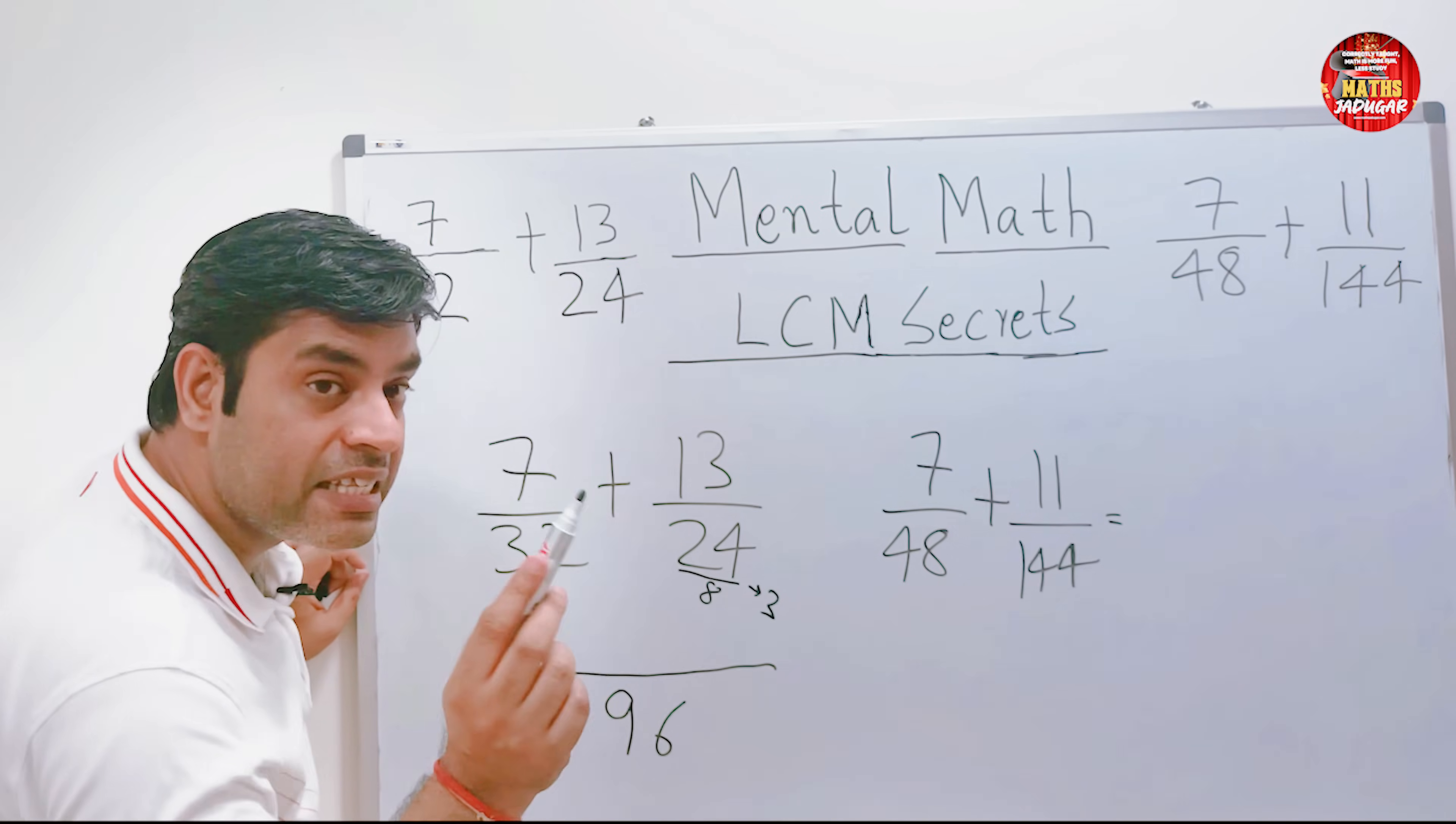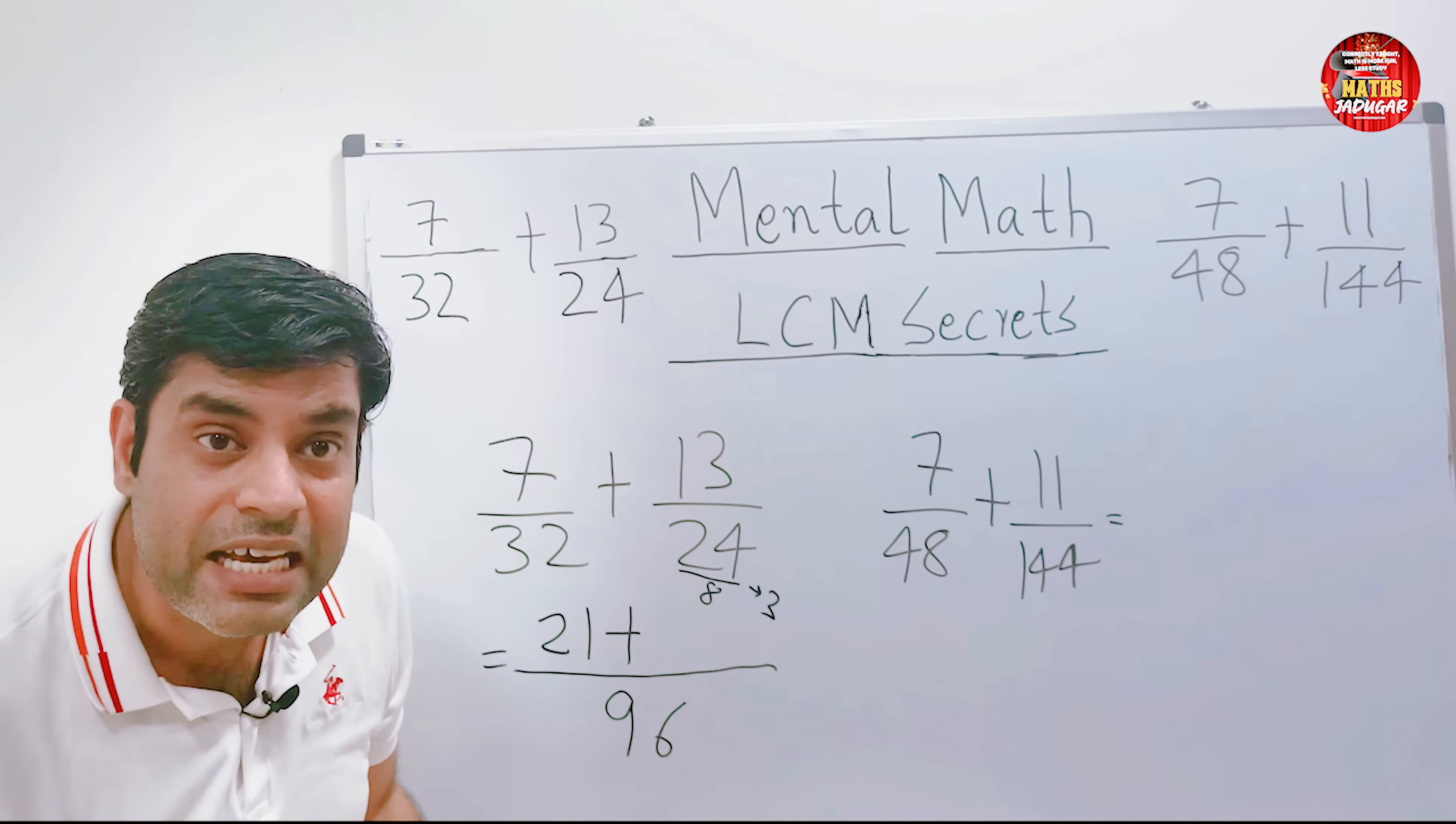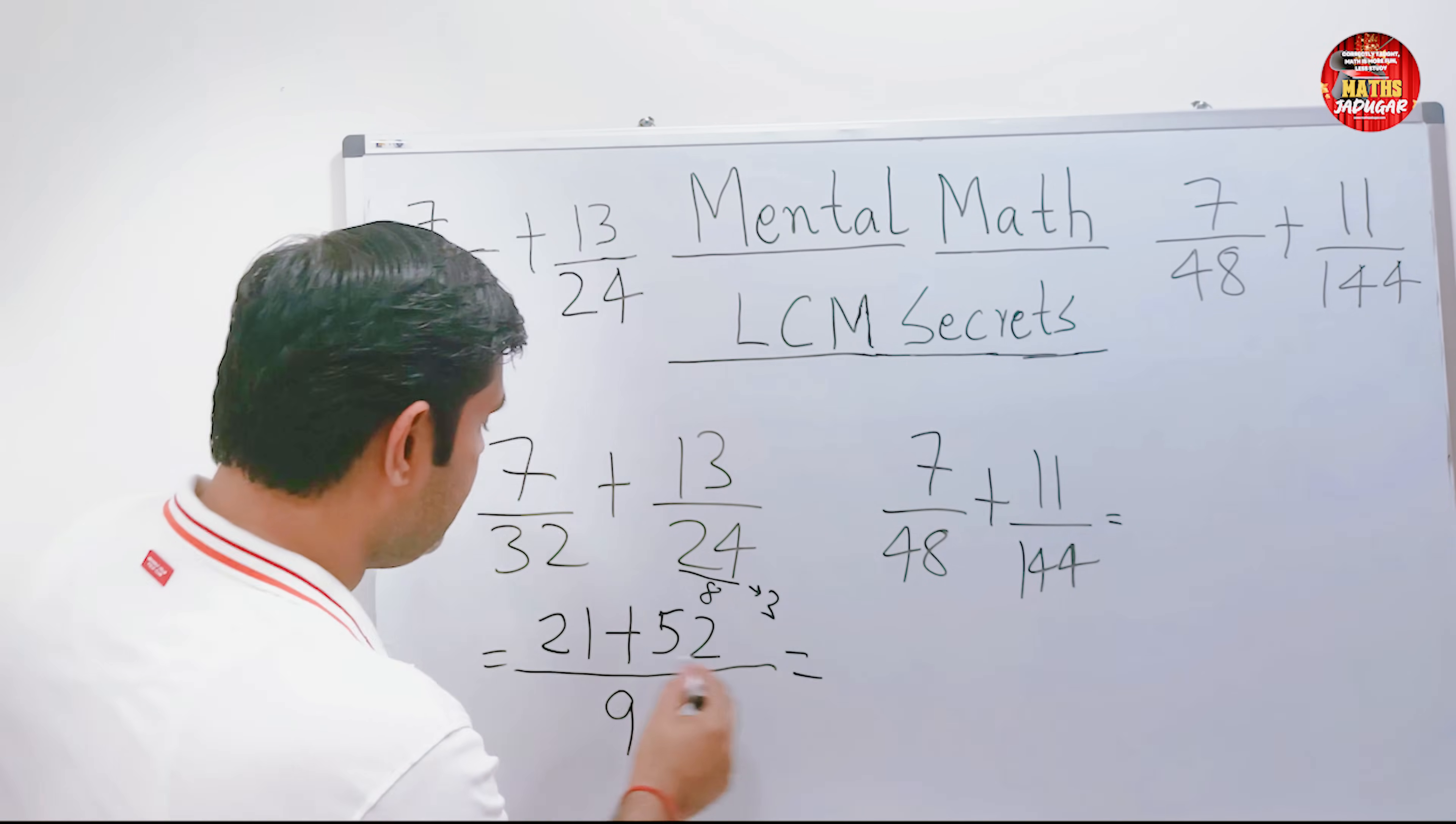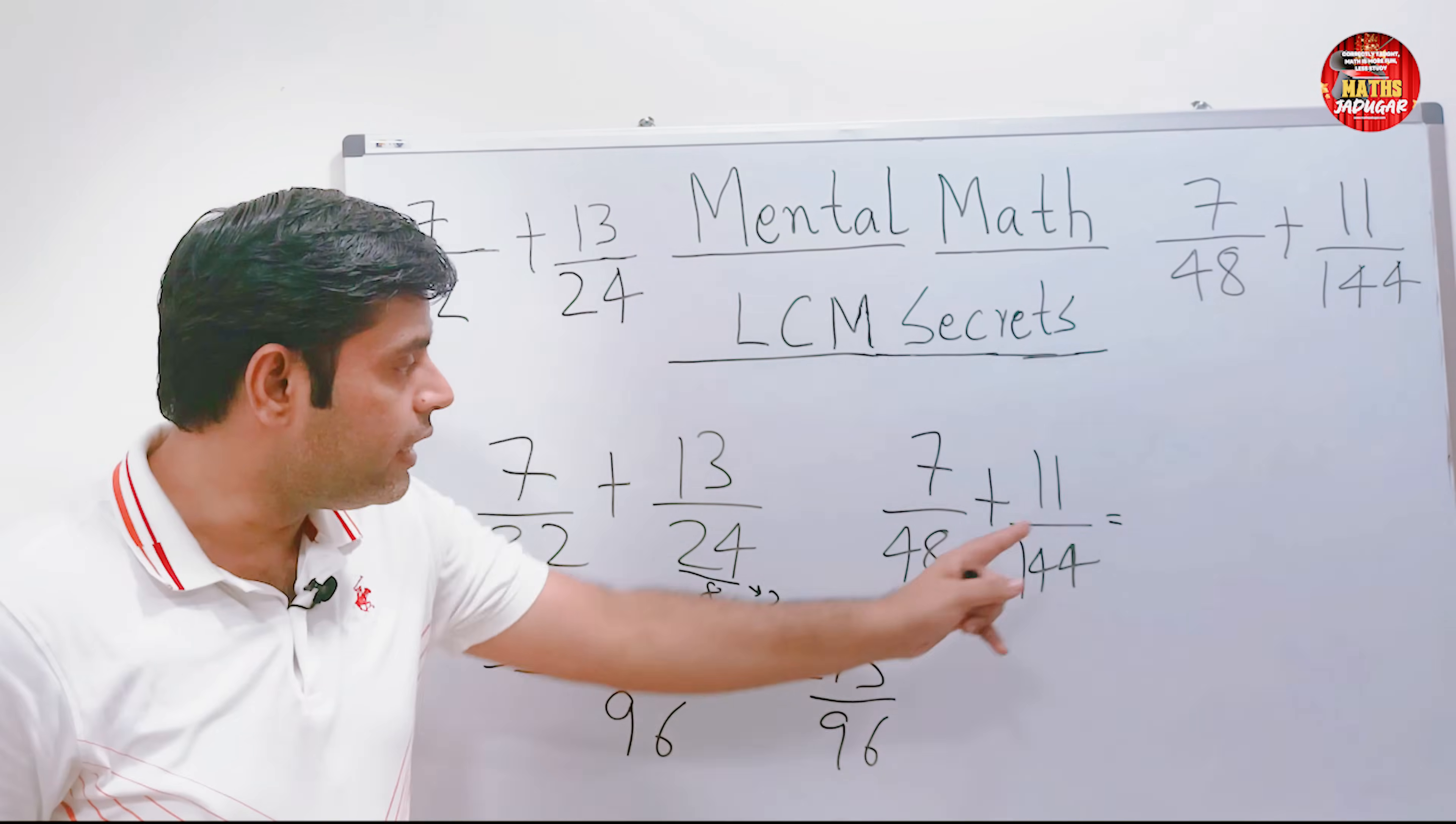Now let's come back. What should I multiply in 32 to get 96? It's 3. So do 7 multiplied by 3 which is 21. And what should I multiply in 24 to get 96? It is 4. So 4 multiplied by 13 which is 52. The answer is 73 by 96. Nothing more than a play, nothing more than a game.